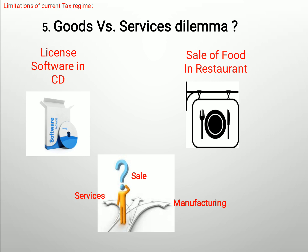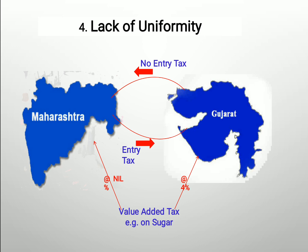Now, lack of uniformity — basically, suppose my goods travel from Maharashtra to Gujarat. When they enter Gujarat, I have to pay entry tax. And if a Gujarat item comes to Maharashtra, they similarly protect local goods by imposing taxes. So there was no uniformity across states.